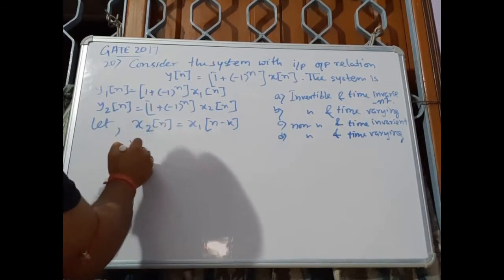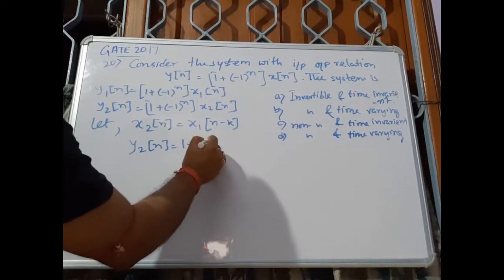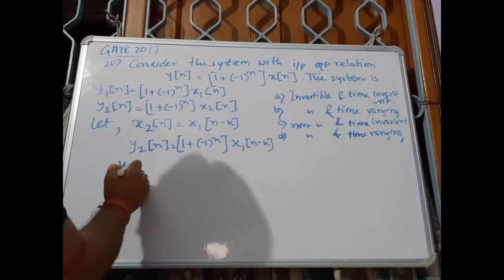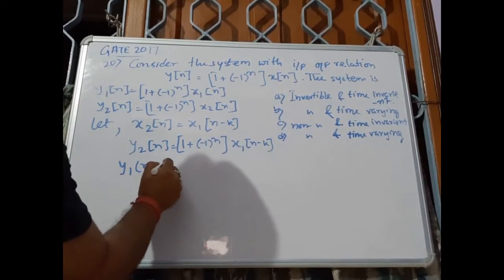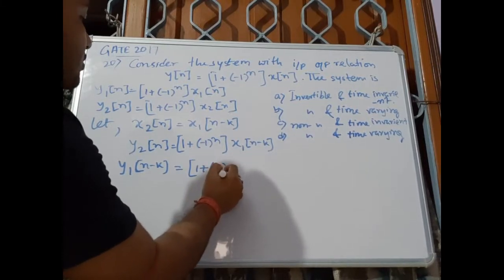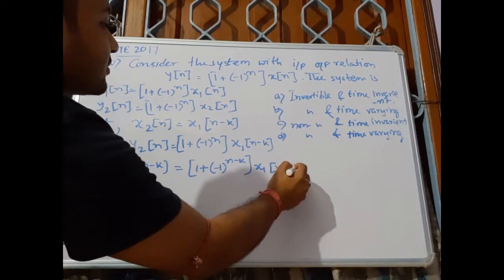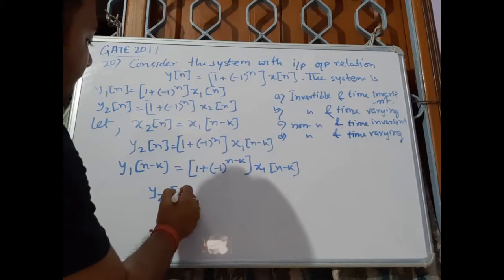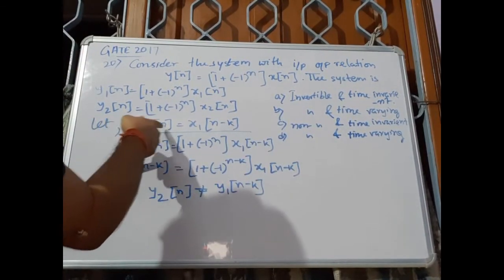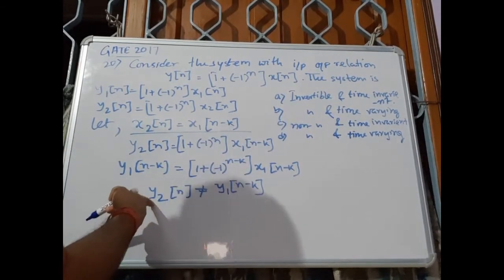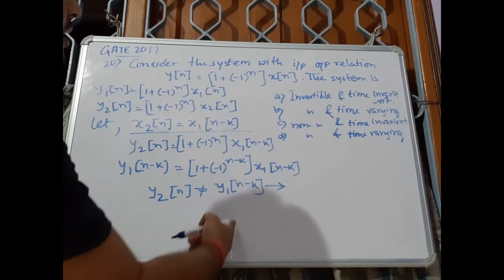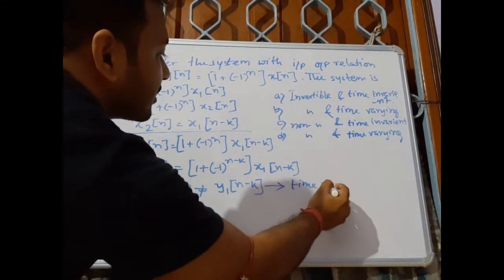Substituting into the equation, y2[n] = (1 + (-1)^n) * x1[n - k]. Now if we write y1[n - k], we need to replace n by n - k, giving (1 + (-1)^(n-k)) * x1[n - k]. We observe that y2[n] ≠ y1[n - k] for the shifted input, so we conclude the system is time varying.